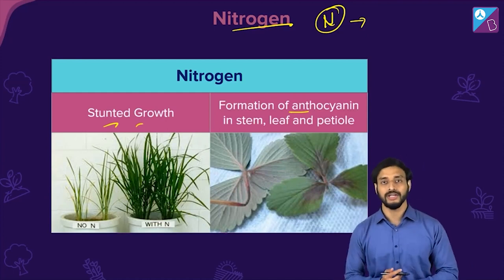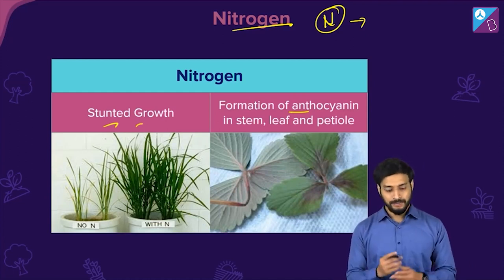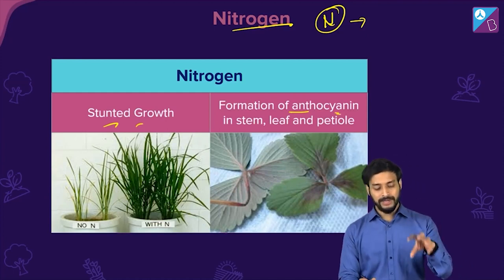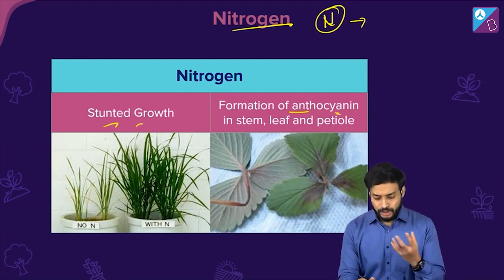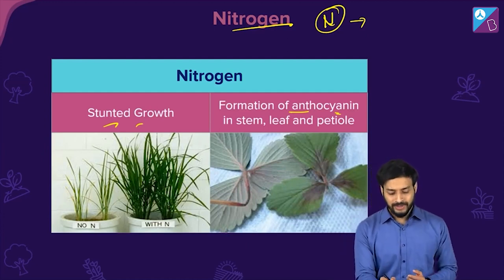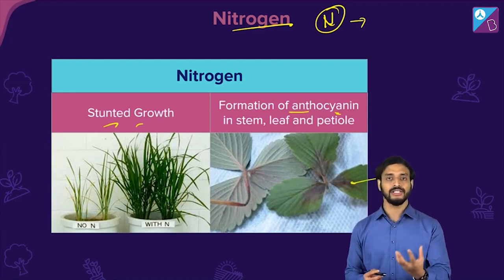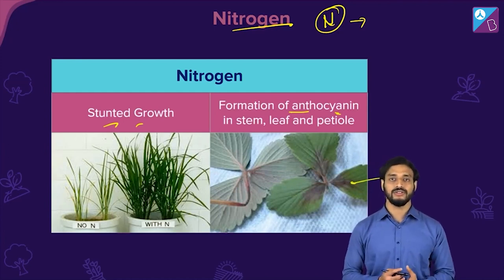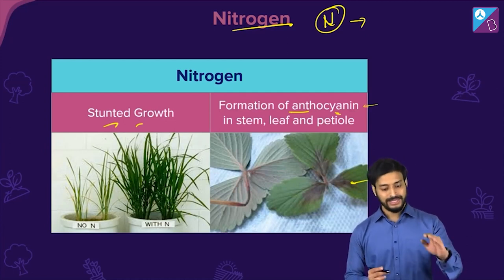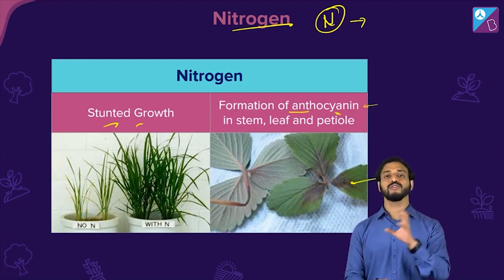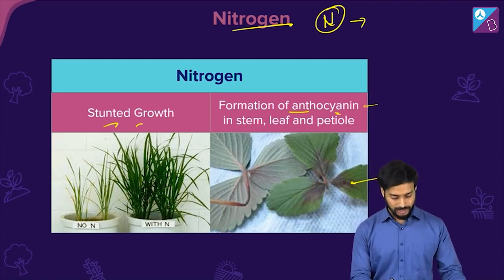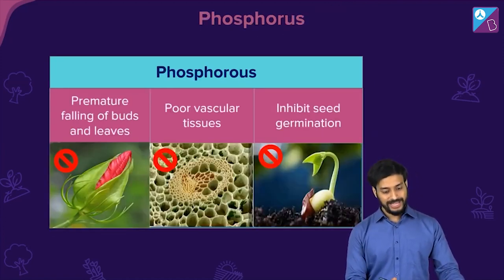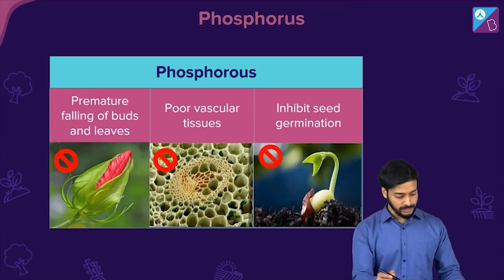Stunted growth means proper growth will not happen. Anthocyanin is a pigment — if it forms in the stems, leaves, and petioles, it causes darkening of those plant structures. So if nitrogen is not present in sufficient amounts, the deficiency symptoms are stunted growth and anthocyanin formation.